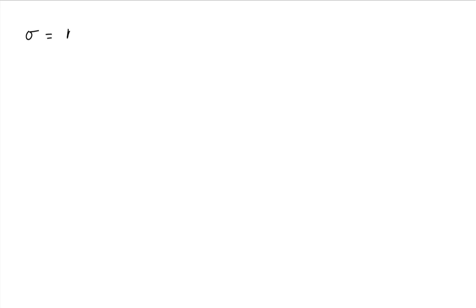Conductivity has been shown to be equal to the number density of conduction electrons times the magnitude of the electric charge squared, times the mean time between collisions, divided by the mass of our charge carriers. In this case, the mass of our charge carrier is the mass of the electron. Conductivity is the measure of the ability for a material, a conductor, to move charge.